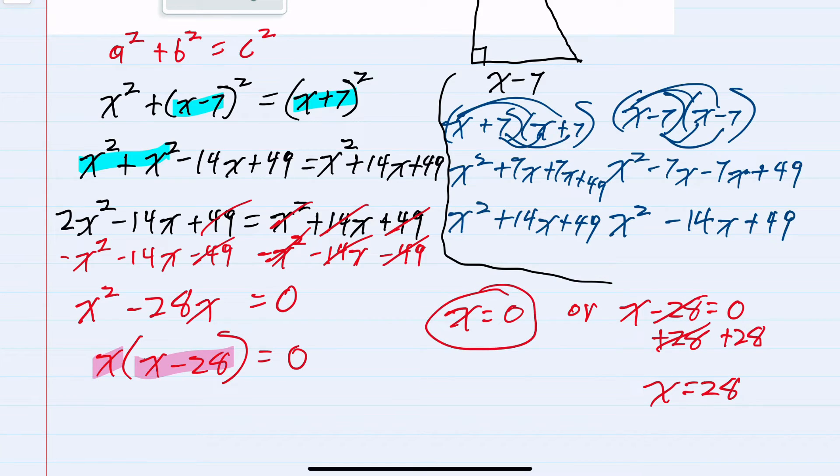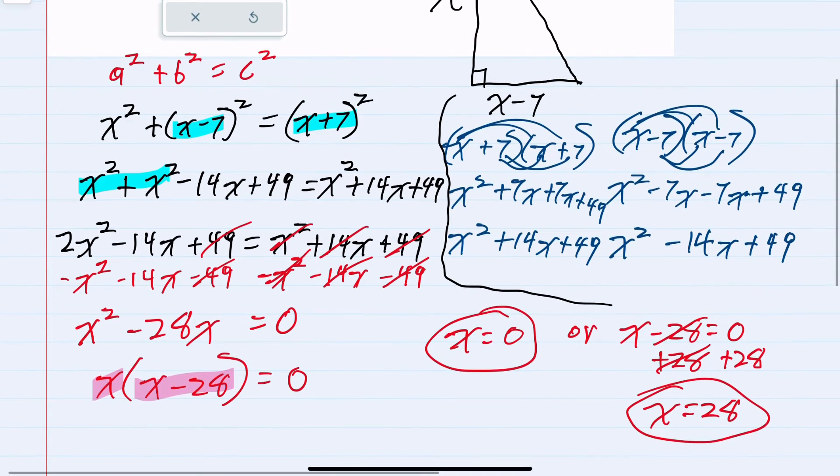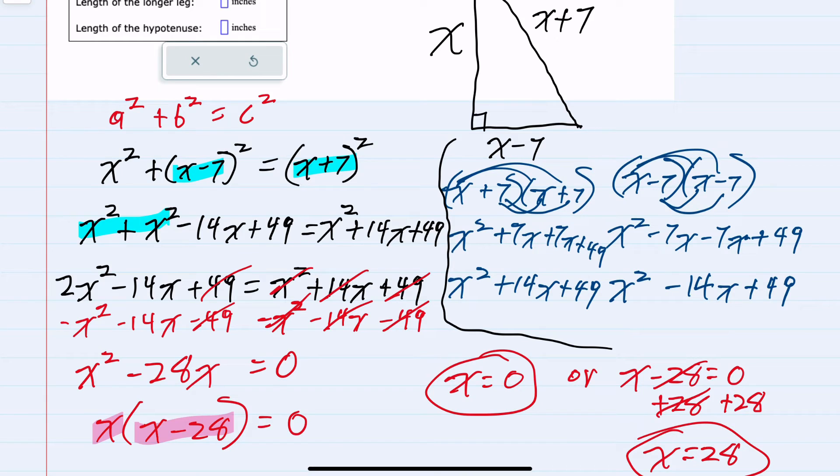So I have two potential solutions either x is zero or x is 28. But since x is a length if I substitute x equals zero back in then one of my lengths for my triangle is going to be zero, and by the way another one would be negative seven. So x equals zero doesn't give me a solution for this triangle.